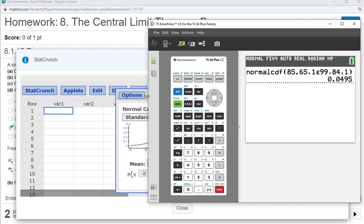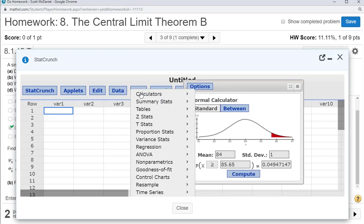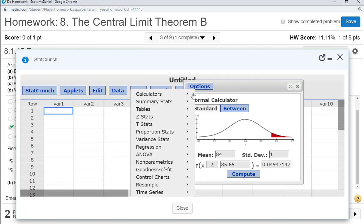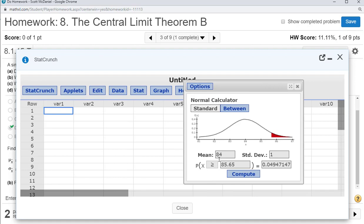And on StatCrunch, I've gone ahead and pulled this up. If you've forgotten, we're going to go to stat calculators and go down to normal. Then just put everything in: mean of 84, standard deviation of one, and choose greater than or greater than or equal to. It doesn't really matter when we have continuous distributions, if it's equal to the particular point there's no value at that particular point. We get the same thing, 0.0495.